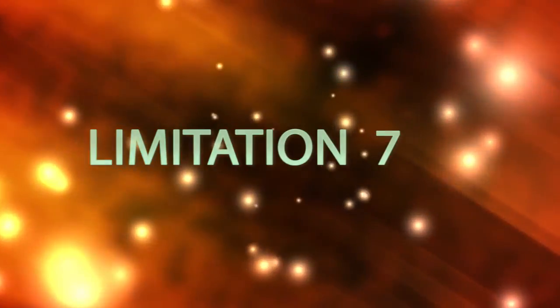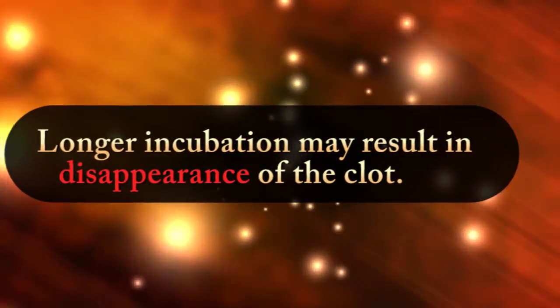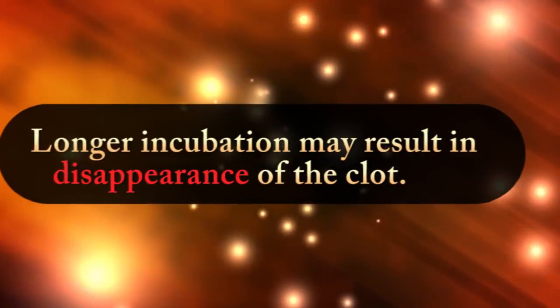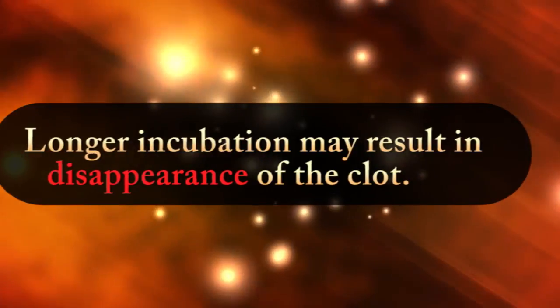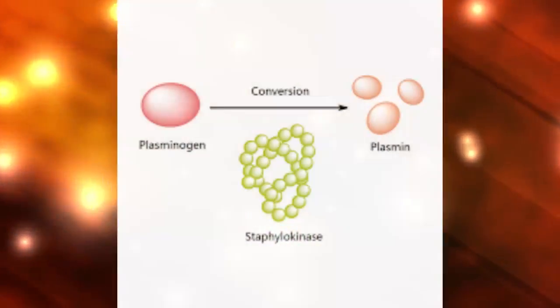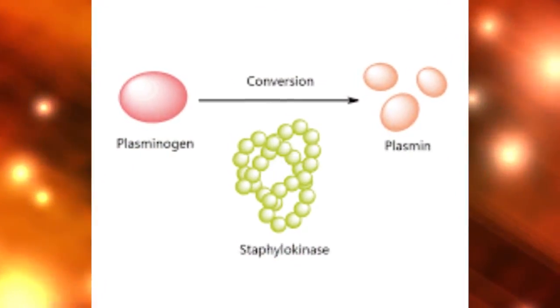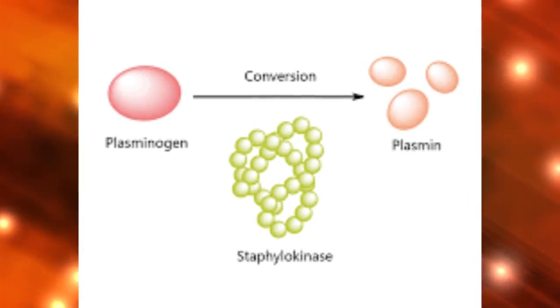Limitation Number 7: Longer incubation at 37 degrees Celsius may result in disappearance of the clot. This is due to the production of fibrinolysin by Staphylococci, which can lyse the clot.